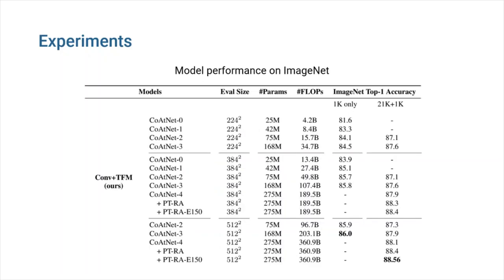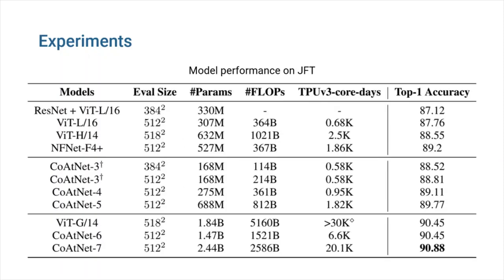Because of the beneficial inductive biases, CoAtNet inherits the excellent generalization characteristic of ConvNets in the low-data regime. Furthermore, when given a large amount of data, CoAtNet not only benefits from the greater scalability of transformer models, but also achieves faster convergence and therefore increased efficiency.